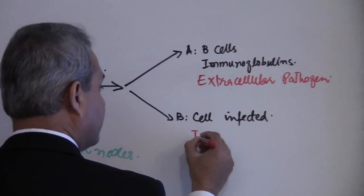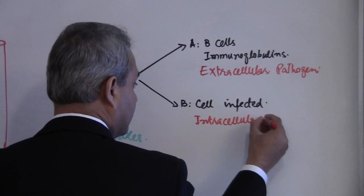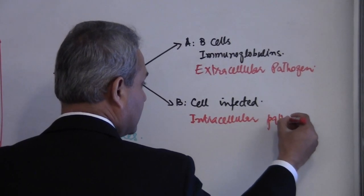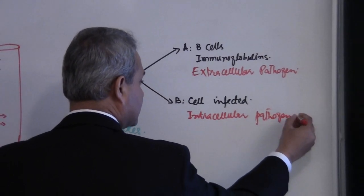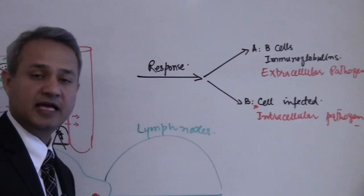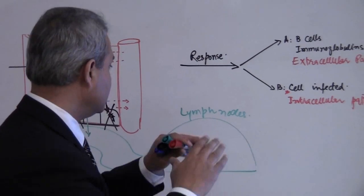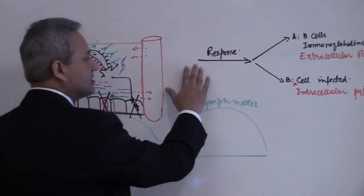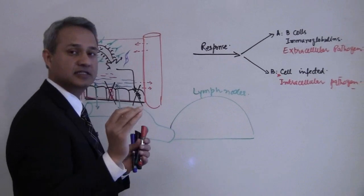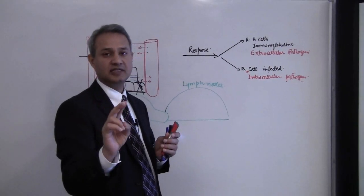The second path is really for intracellular pathogens. In this case, we would have to detect the cell which is infected and then take care of that cell. So these two paths, this response is orchestrated and done by T cells.